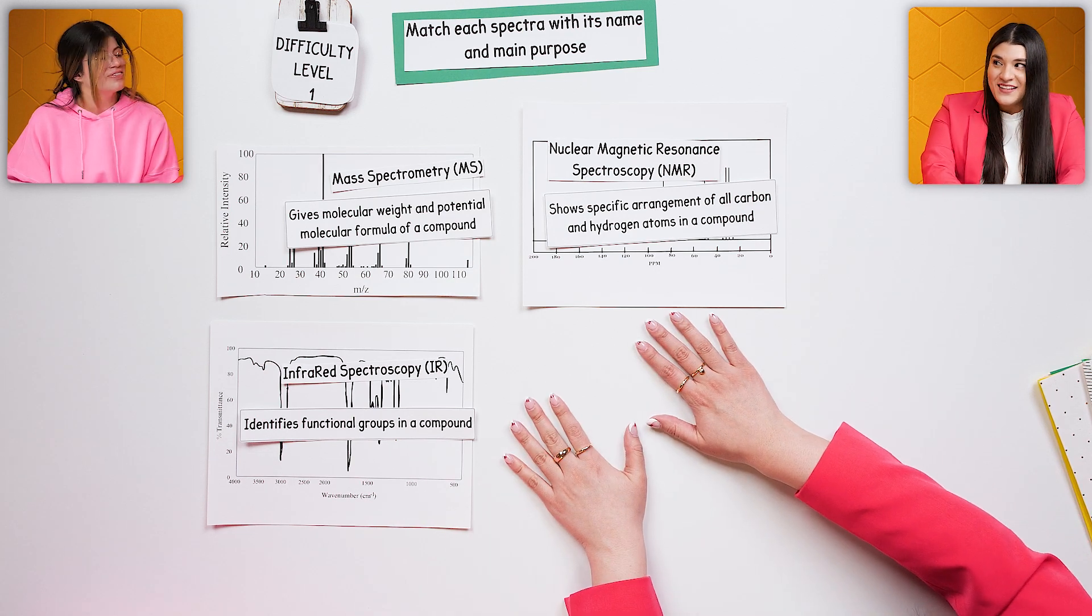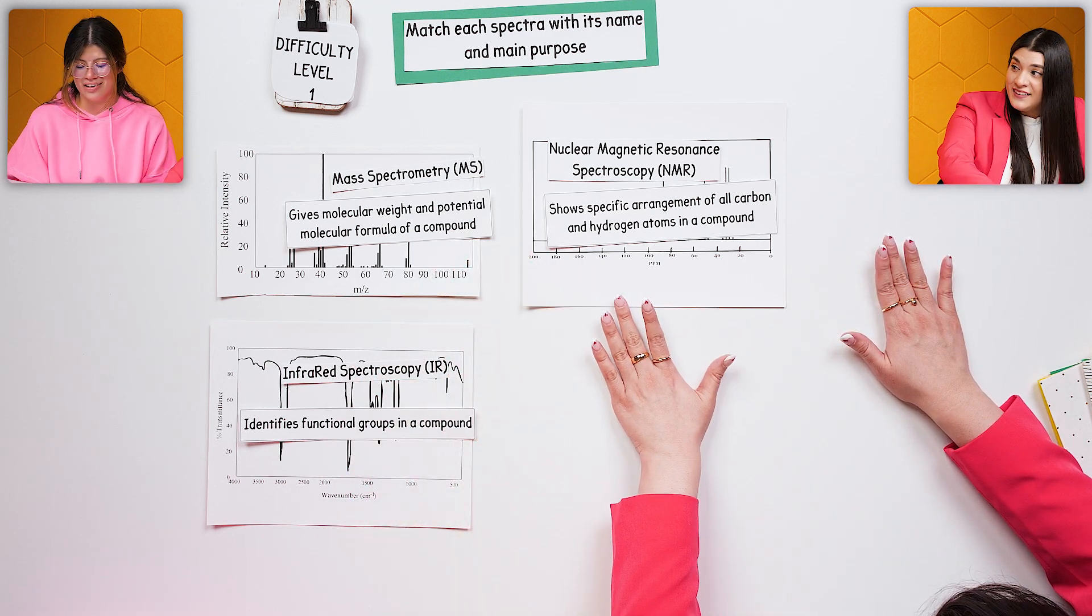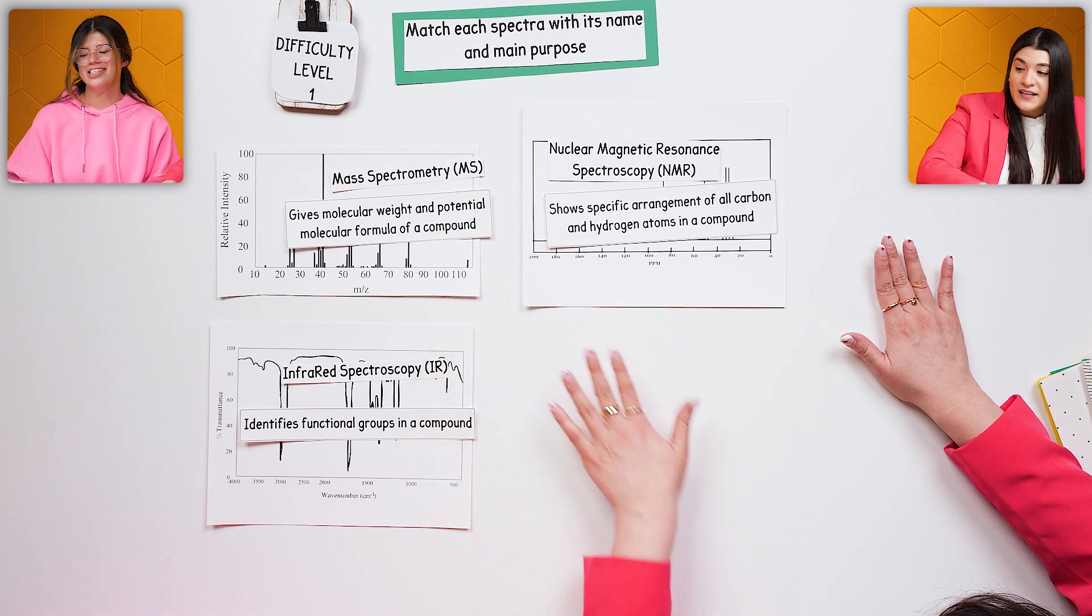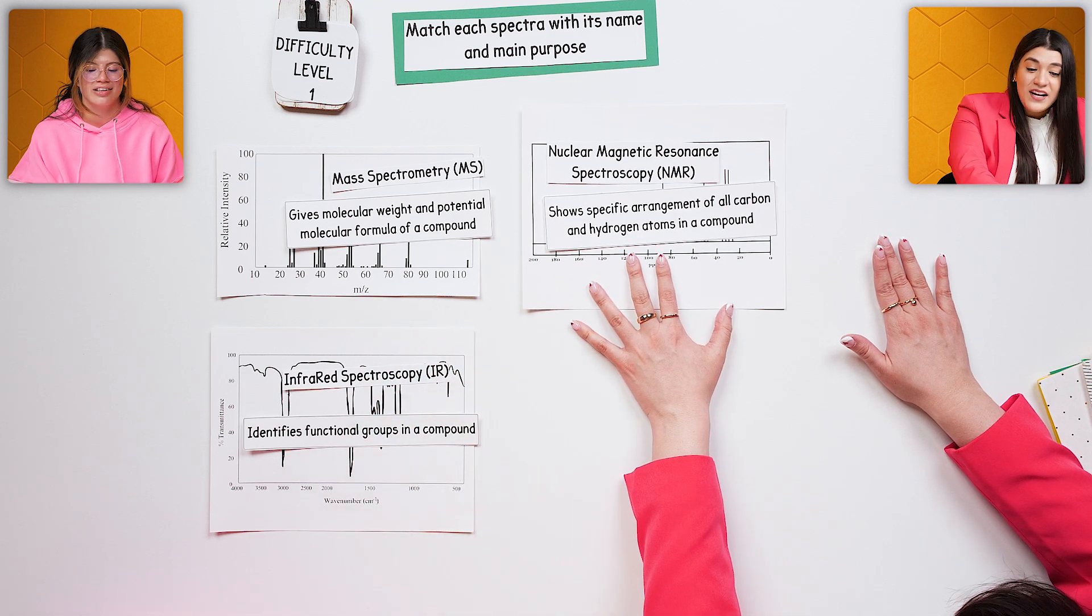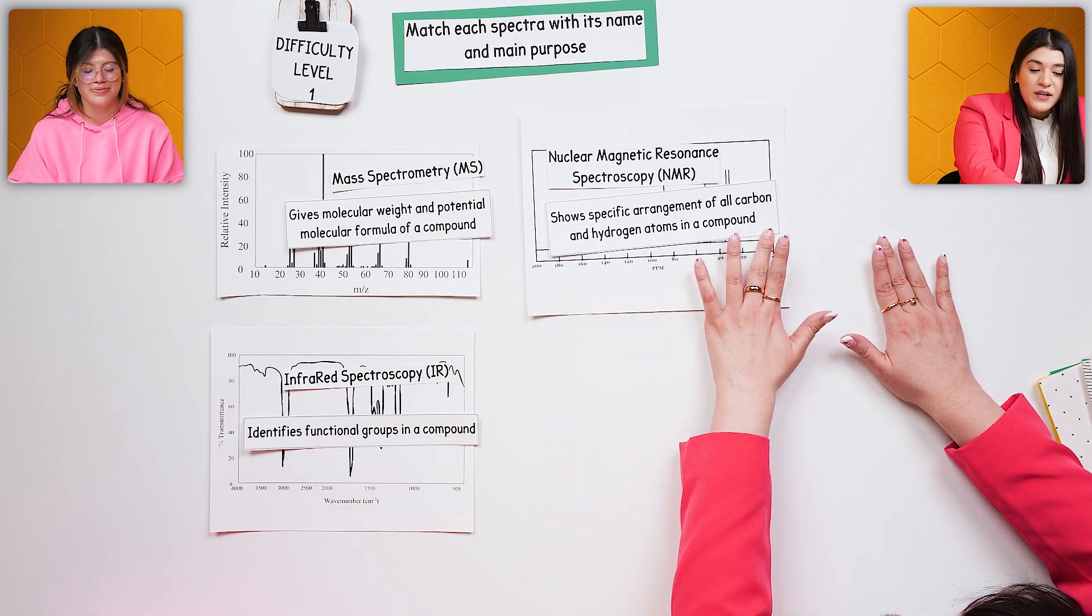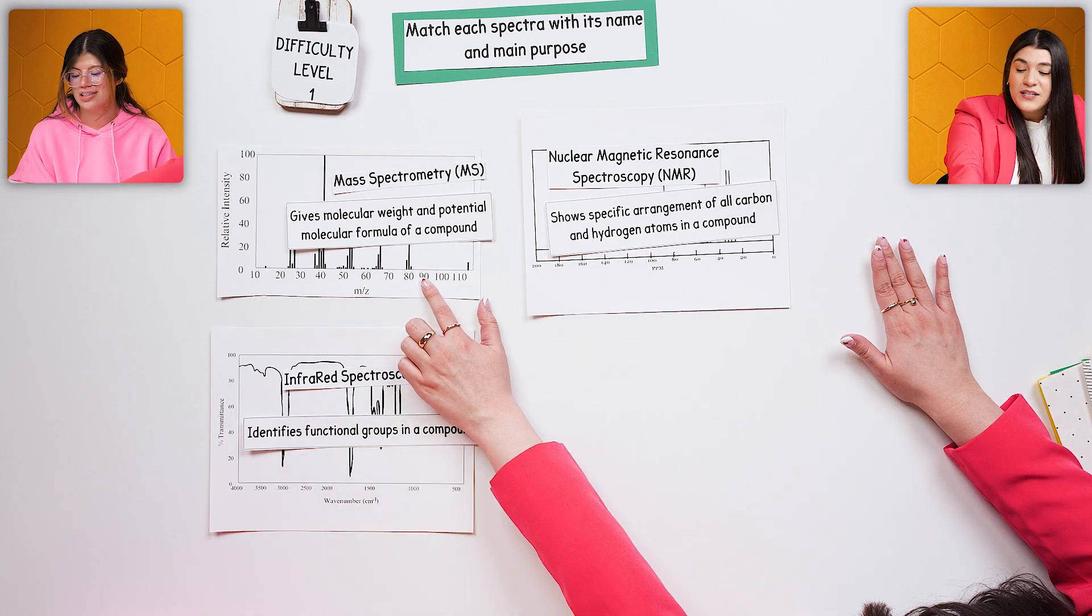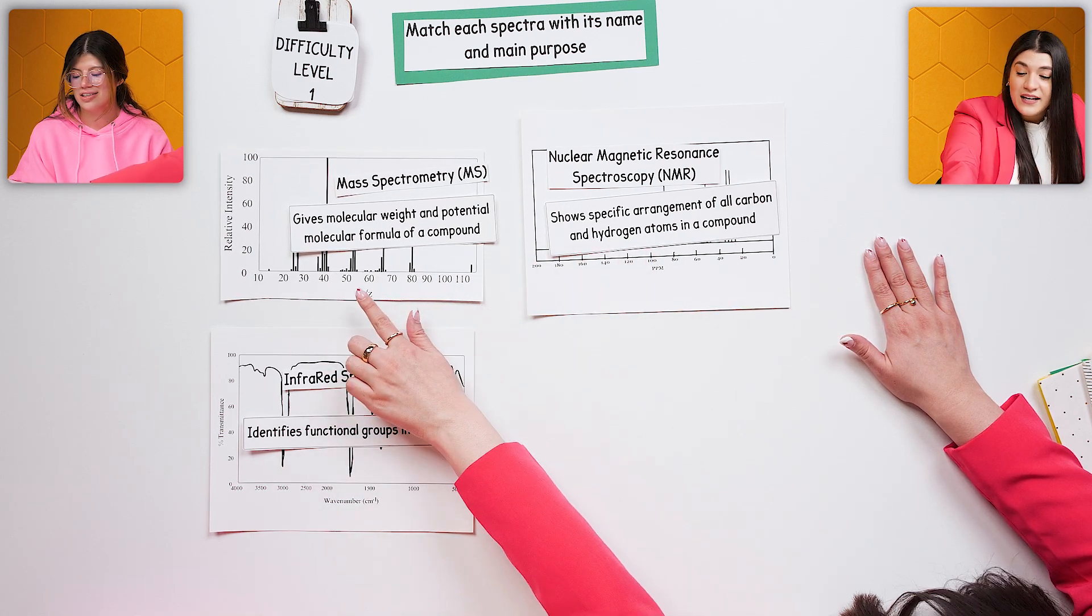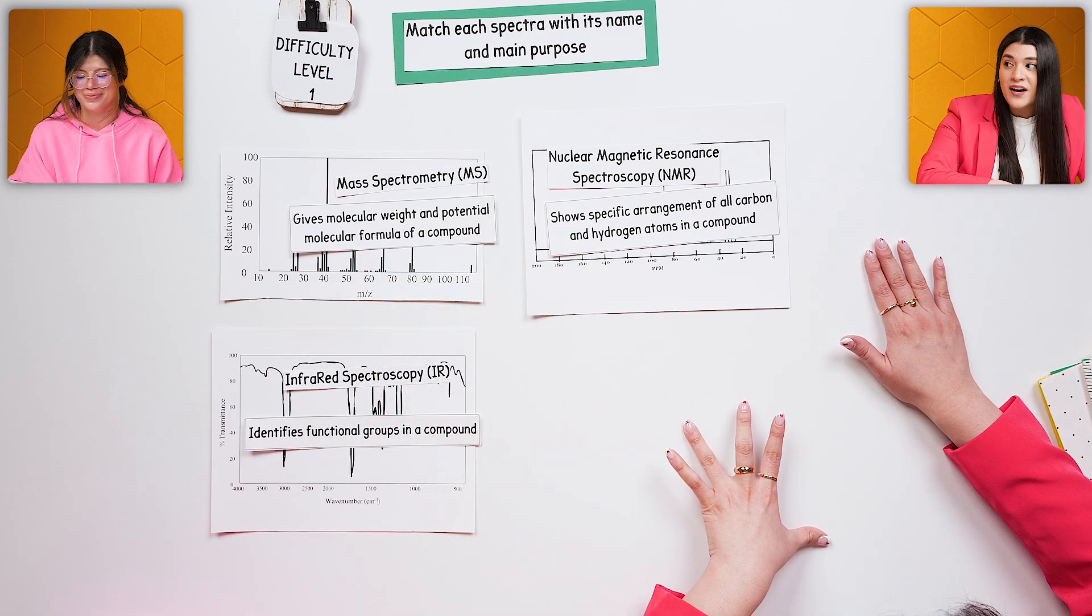Now that we know what everything does, this is going to come in handy. In case we have a question that has every single one, you know the purpose. This is going to tell me the functional group if I have the IR. If I have NMR, whether that's hydrogen or carbon, that's going to give me the specific arrangement of those. And this next one would give me the molecular weight, and that's really helpful because it can give me the molecular formula to figure out how to draw the unknown compound.